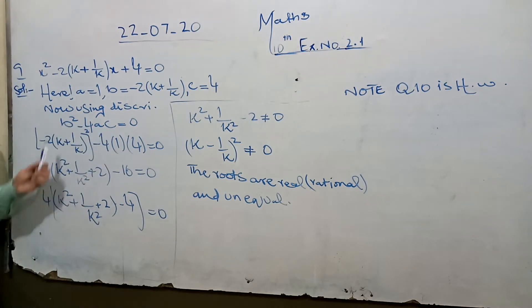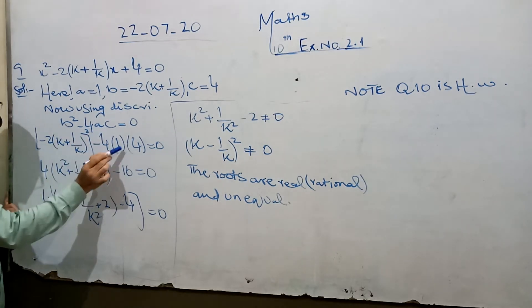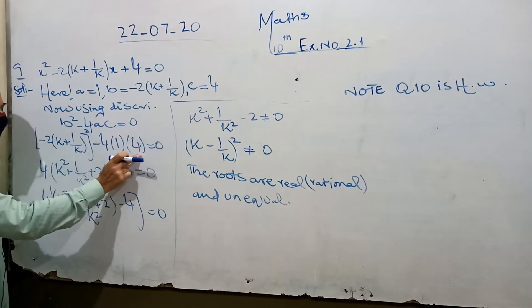We put this in the discriminant: b² - 4ac. So b value [-2(k+1)/k]² minus 4 times a value 1 and c value 4, which gives 16.